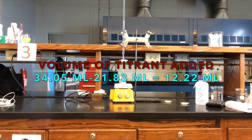The amount of titrant needed to reach the end point of the titration is simply the difference between the initial and final burette volumes. And in this case, that volume is 12.22 milliliters.